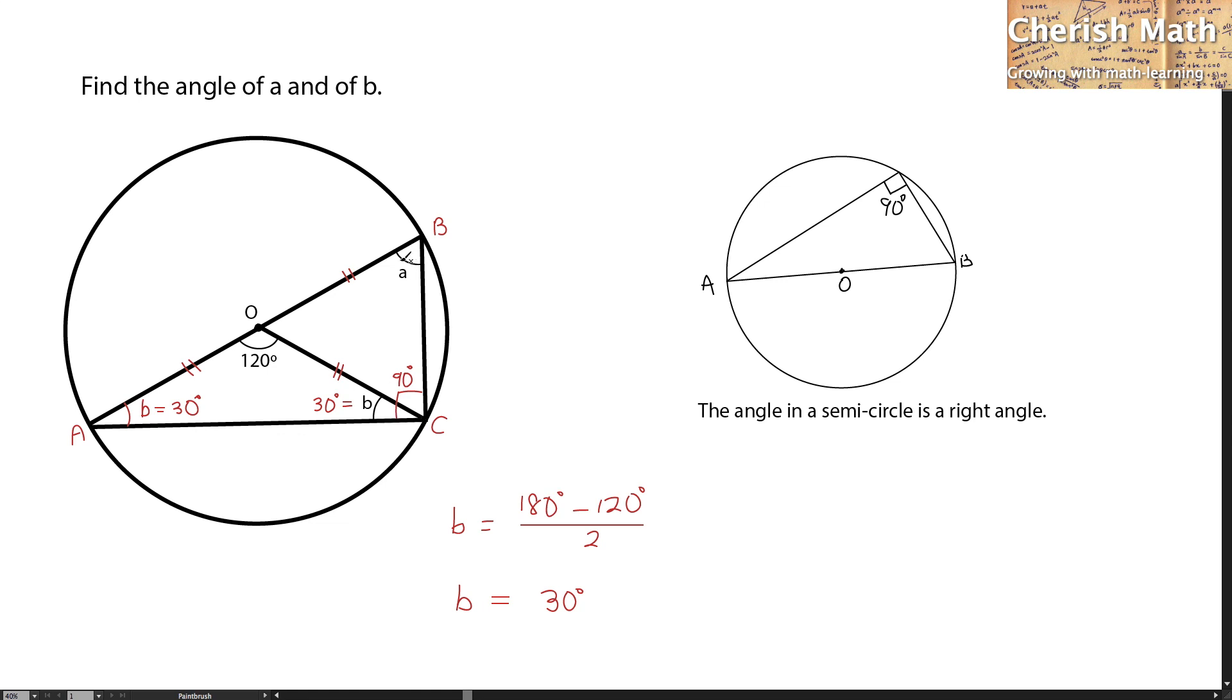Now, I want to find what is the value of A. Since BOC is an isosceles triangle, this part would be the same as angle A as well. Now, angle A, I'm going to use 90 degrees here and take away 30 degrees, which is the B.